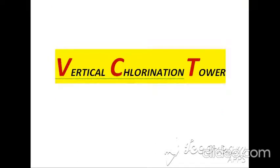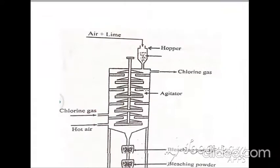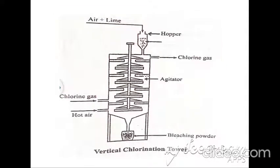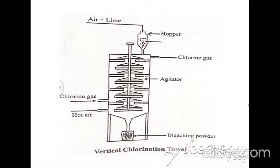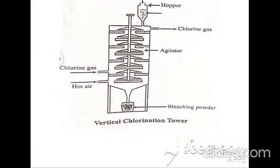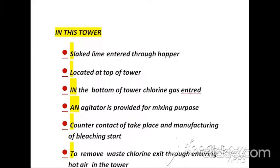The second plant used for production of bleaching powder is called the vertical chlorination tower. In this tower diagram, a hopper is available at the top, chlorine gas enters from the bottom and exits from the top, an agitator is provided for mixing, hot air also enters at the bottom, and bleaching powder is collected at the bottom.